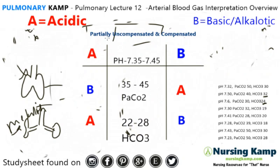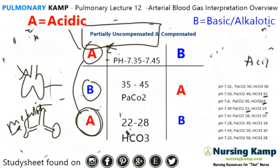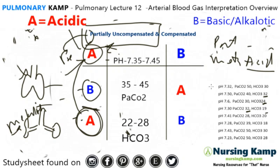Next: pH of 7.30 is outside the normal area, so it's either going to be partially or uncompensated. PaCO2 is 32 and bicarb is 19. We connect these together: we have an acidosis in the metabolic area — metabolic acidosis. Now everything is circled on the peripheral — outside the middle. So it has to be partially compensated metabolic acidosis.